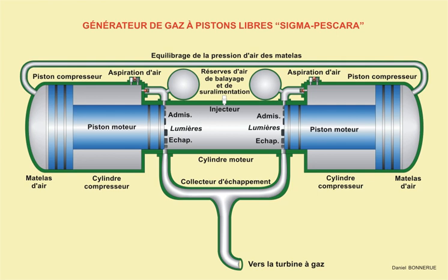On their large civil turbofans, Rolls-Royce split the compression system into three: a fan, an intermediate pressure compressor, and an HP compressor, each unit being driven by its own turbine unit. The RB199 military turbofan also has this arrangement.